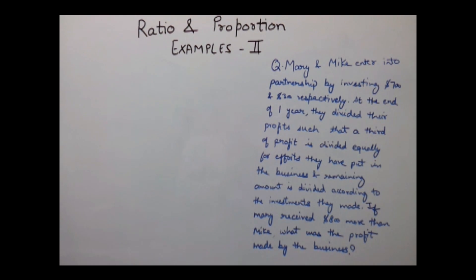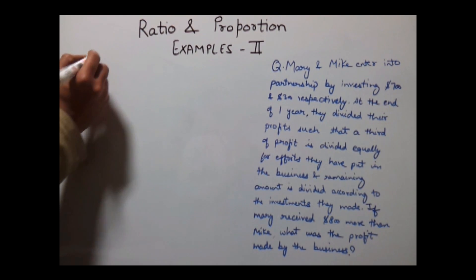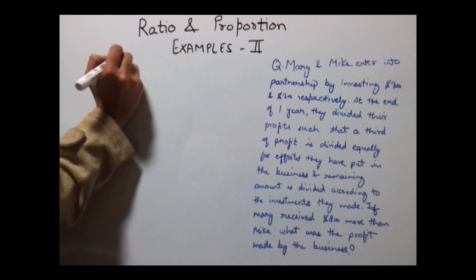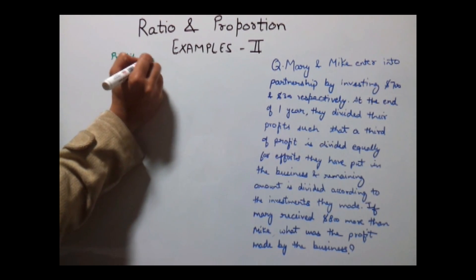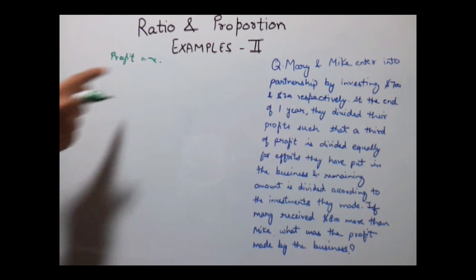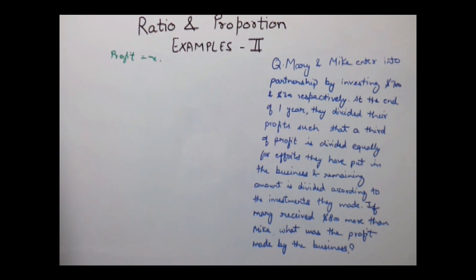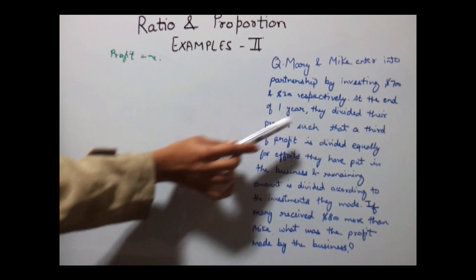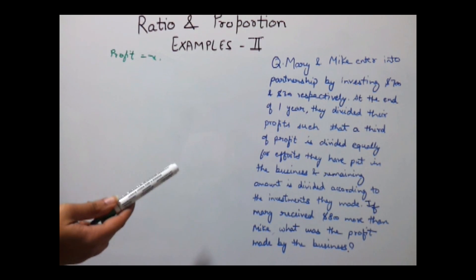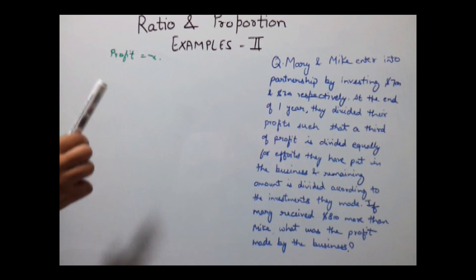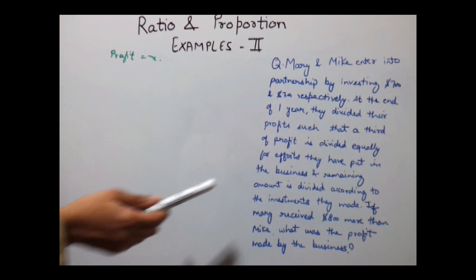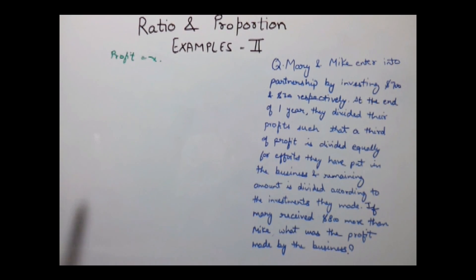Let's suppose the business made profit of X. Now, this profit was divided on two bases. First base was that one third of this profit was divided equally between the partners and the other two parts of the profit was divided according to their investment.